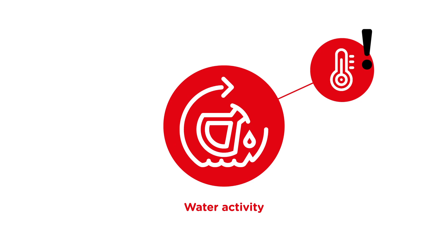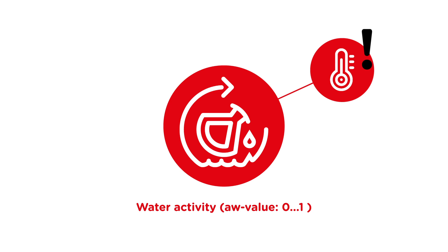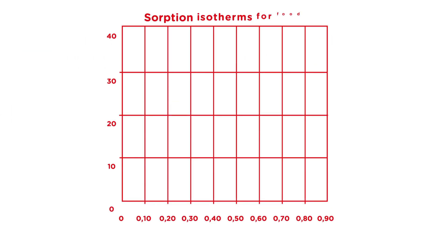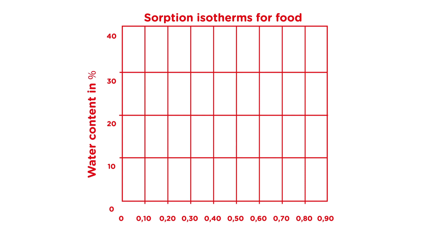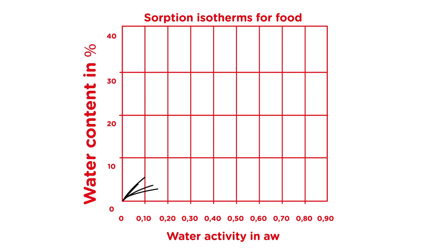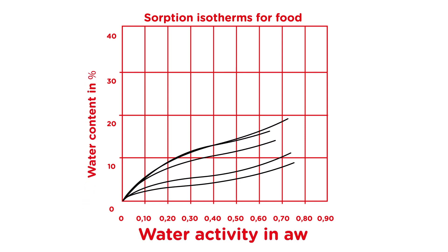Water activity is highly temperature-dependent and is represented as AW, the measurement unit for water activity. Water sorption isotherms provide the relevant water content value for each water activity value, showing the complex relationship between water content and water activity.